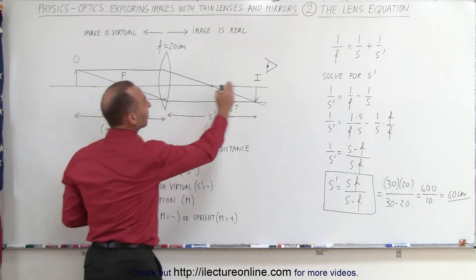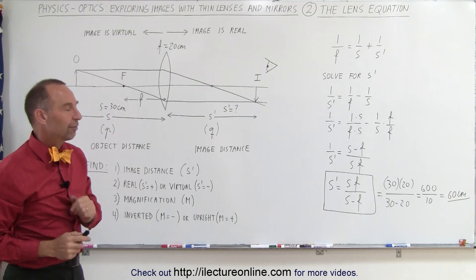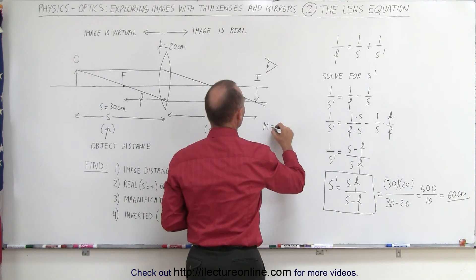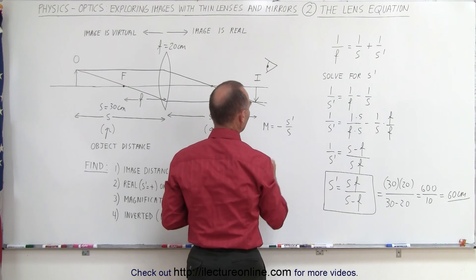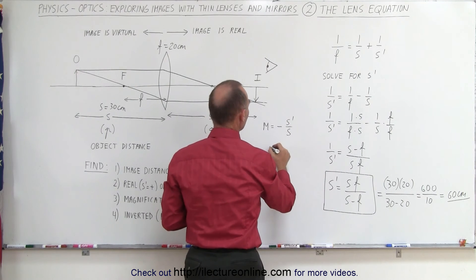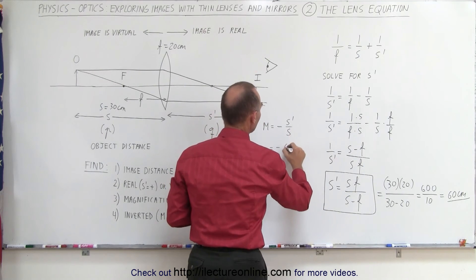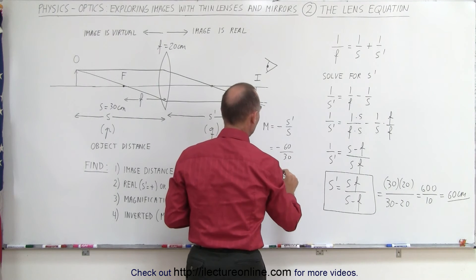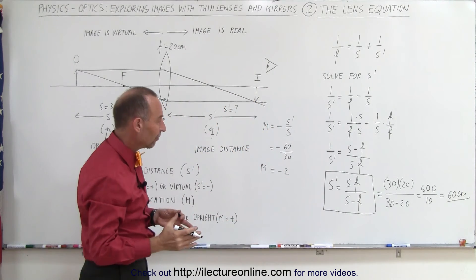It's on the right side of the lens 60 centimeters away from the lens. Now we want to know what the magnification is. It turns out that the magnification is equal to minus the ratio of S prime over S. That's the equation. Plug in the values. This would be equal to minus S prime, which is 60 centimeters, divided by S, which is 30 centimeters. Therefore, the magnification is a minus 2.